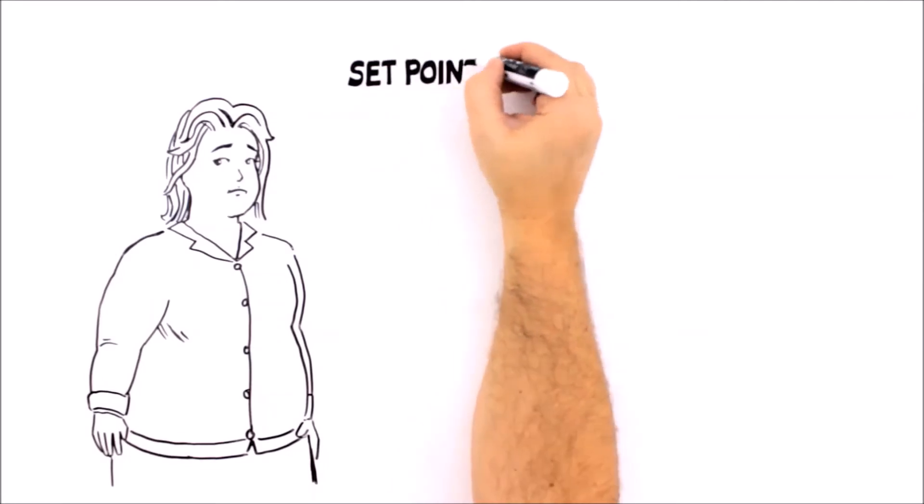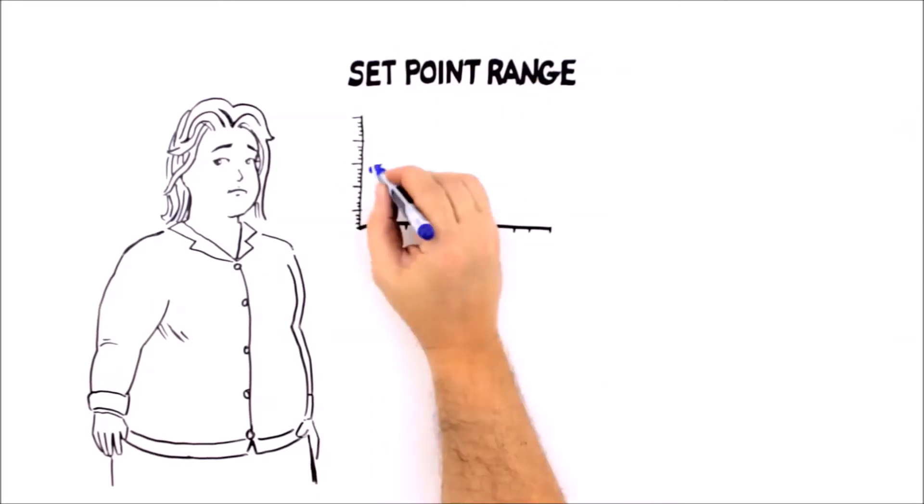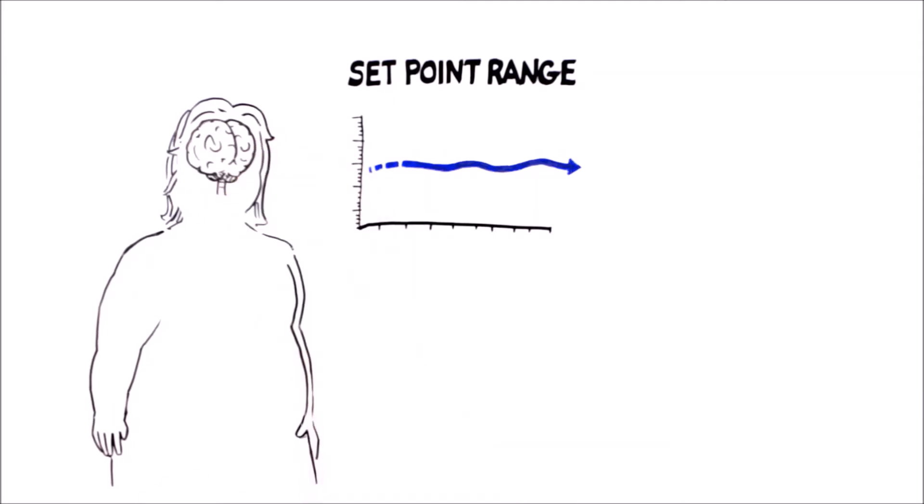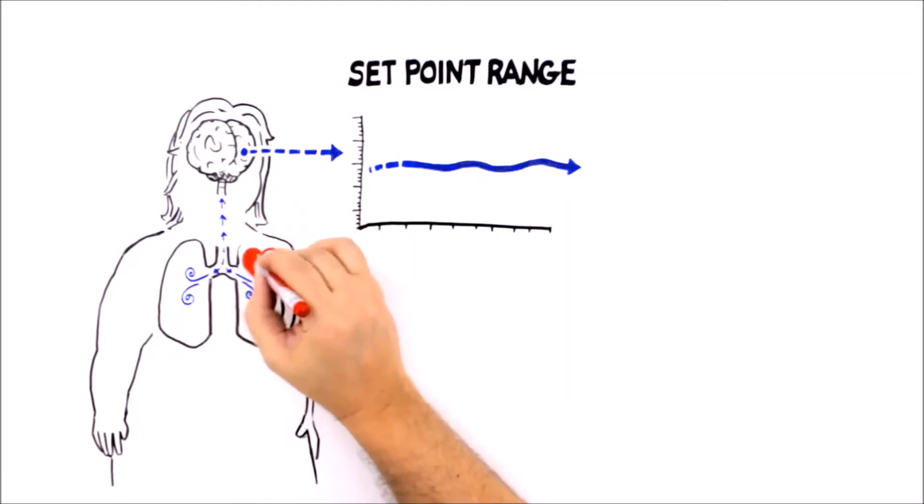One theory, called the set point theory, suggests that no matter what you want to weigh, your brain has a certain weight range and body fat level that it works to maintain within the set point range. This means that you don't control your body fat consciously. Rather, your brain manages it like it does your breathing and heart rate.